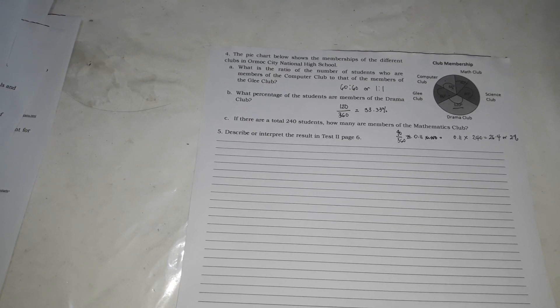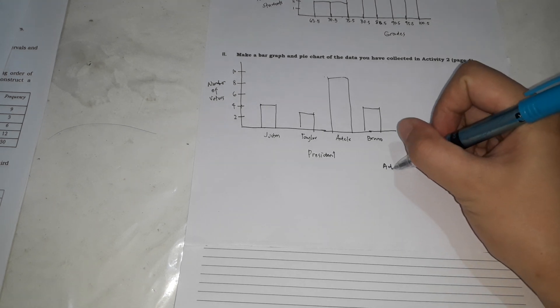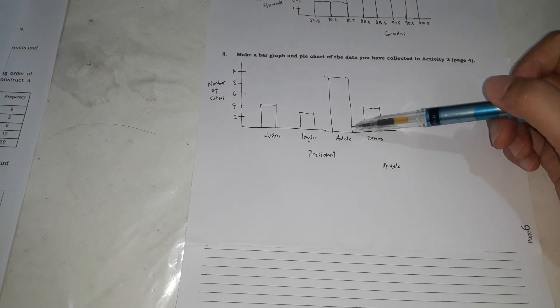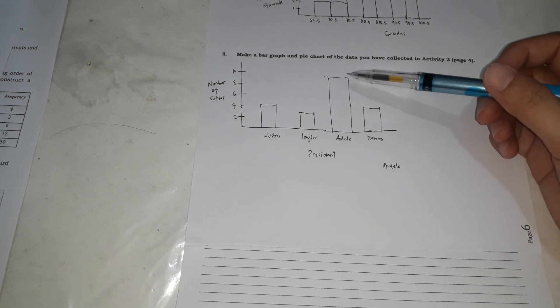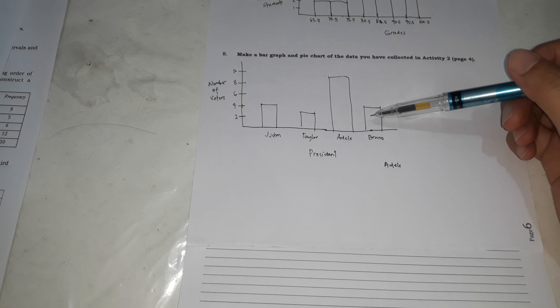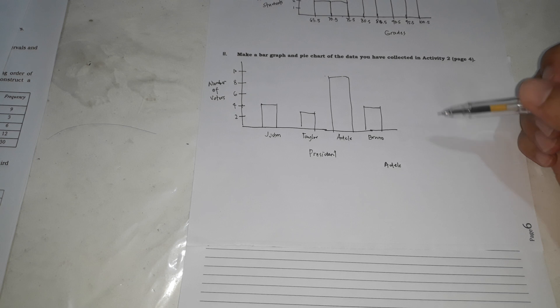The next question, number 5. Describe and interpret the results in test 2 and page 6. We're going to go back to page 6, test 2 and then we're going to describe the result. For me, this is my page 6. To describe the results, what you're going to do is like this. For example, Adele, this talks about the president. The number of voters who choose Adele as their president is 8. Is it 8 or 9? And then for Taylor, it's 3. For Justin, it's 4. For Bruno, it's 4. In interpreting and describing this data, what you're going to do is just, this is going to state Nancy.